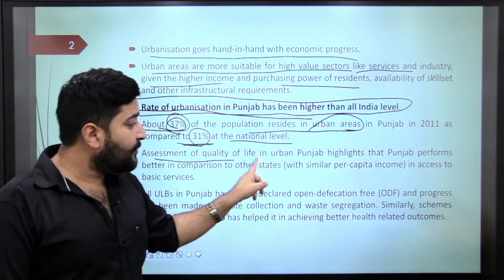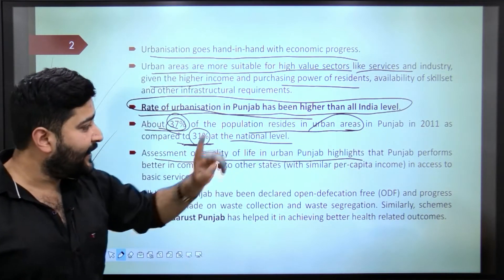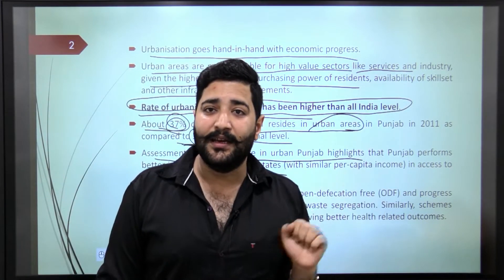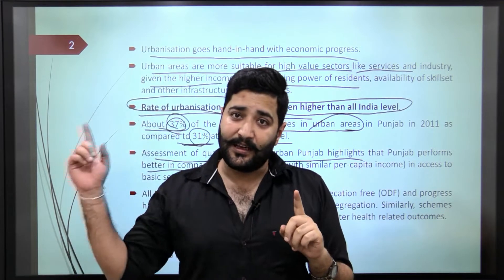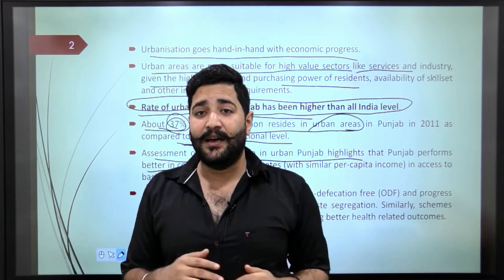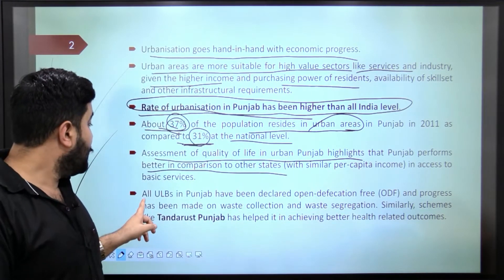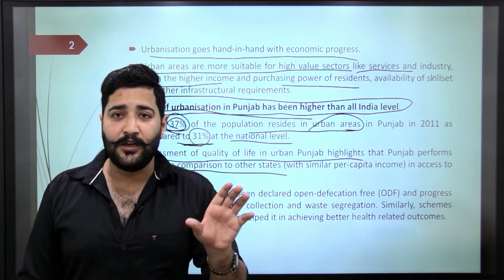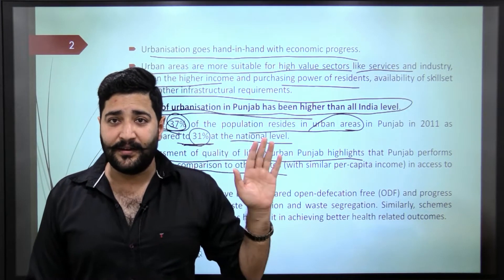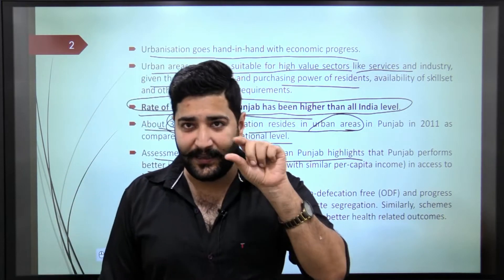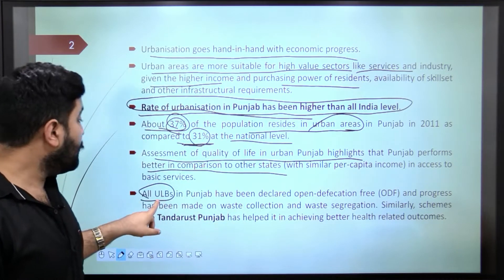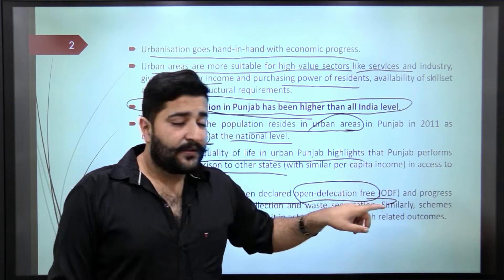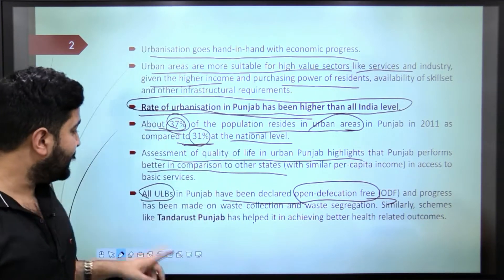Assessment of quality of life in urban areas highlights that Punjab performs better in comparison to other states. We discussed per capita income earlier — Punjab's per capita income is comparatively quite high, that's why it performs better. And regarding Swachh Bharat: all Urban Local Bodies (ULBs) — like municipalities etc. — in Punjab have been declared ODF, that is Open Defecation Free.